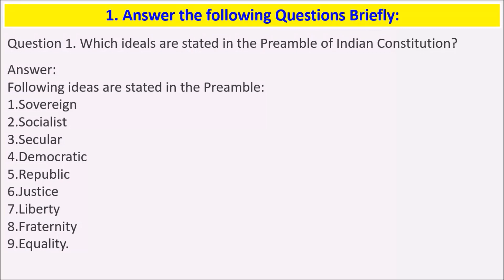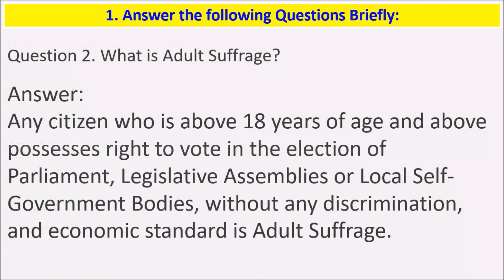Which ideas are stated in the Preamble of the Indian Constitution? The following ideas are stated in the Preamble: sovereign, socialist, secular, democratic, republic, justice, liberty, fraternity, and equality. These are the ideas which are presented in the Preamble of our Indian Constitution.